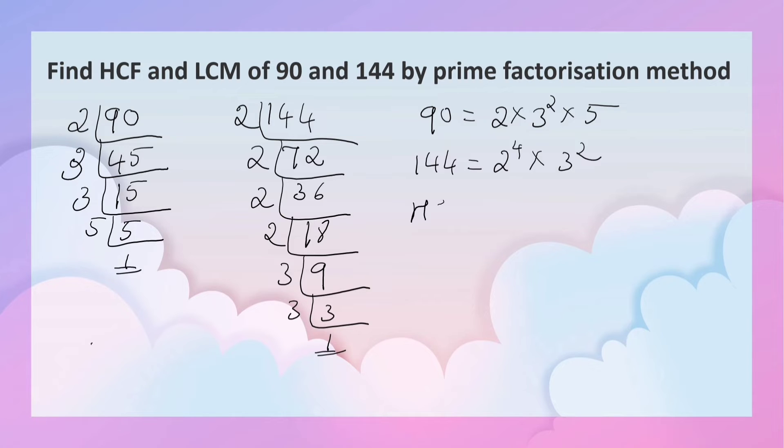HCF. In HCF you have to write the common factors with the least power. Here what is common? 2 and 3. So, 2 × 3². 2 has the lesser power and 3 squared. What is it? 2 × 9 equals 18. 18 is the HCF.